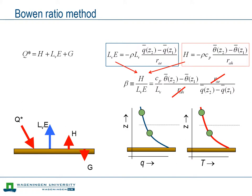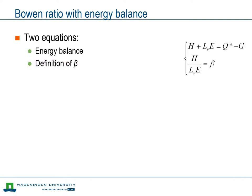However, this Bowen ratio does not give us the flux yet. To that end we need to combine the Bowen ratio with the surface energy balance. This gives us two equations, the energy balance equation and the expression for the Bowen ratio, with two unknowns, the sensible heat flux and the latent heat flux. By combining the equations we obtain expressions for the sensible heat flux and the latent heat flux.